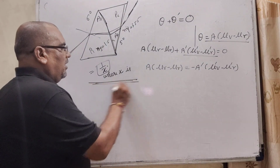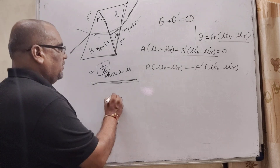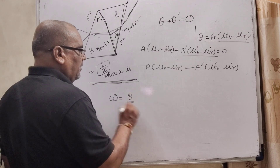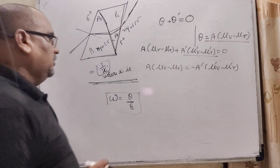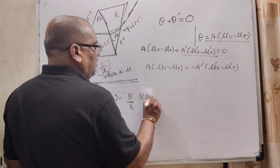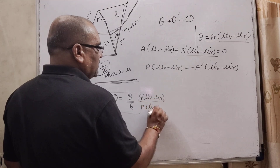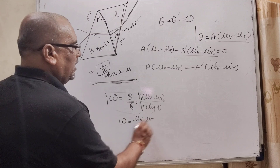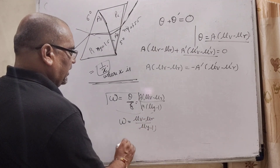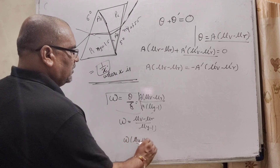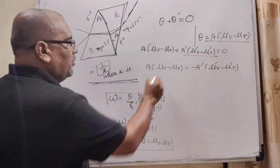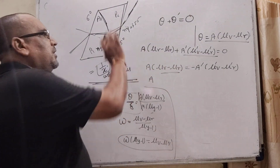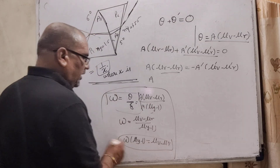The formula for dispersive power omega is: ω = (μv − μr) / (μy − 1), which means dispersion divided by mean deviation. This can be rearranged as ω(μy − 1) = μv − μr. We substitute this because μv and μr are not given in the question, so we need to convert everything into the form of dispersive power.